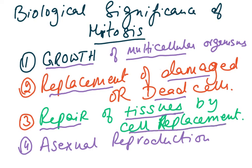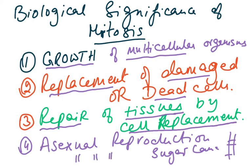Repair of tissues occurs by cell replacement. The fourth reason is asexual reproduction — for example, if you cut sugarcane into pieces and plant them, they grow by asexual reproduction through mitosis, developing roots and shoots. We will go into more detail in the next video, which will finish this chapter.